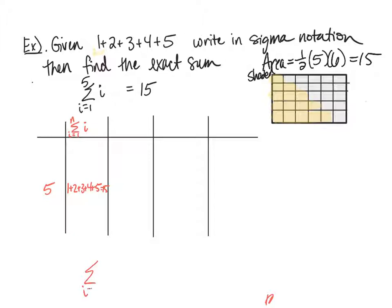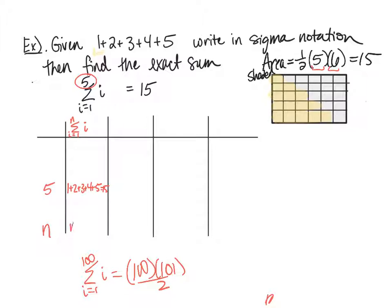We can use this trick in general. If I asked you to add the first 100 terms, notice that for 5 terms we got 5 times 6 divided by 2. For 100 terms it's 100 times 101 divided by 2. And in general for n terms, the formula is n times (n plus 1) divided by 2.